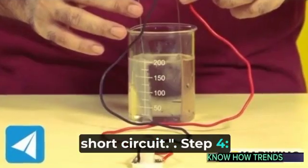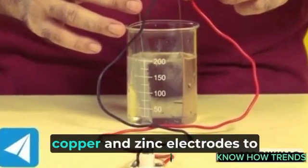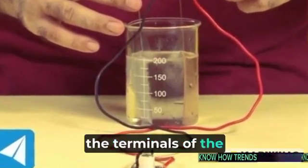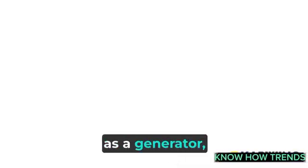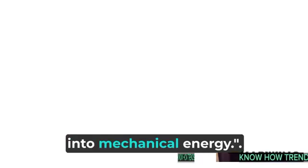Step 4: Connect the circuit. Connect the wires from the copper and zinc electrodes to the terminals of the small motor. This motor will act as a generator, converting the chemical energy into mechanical energy.